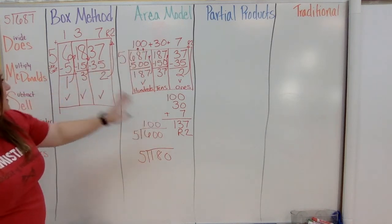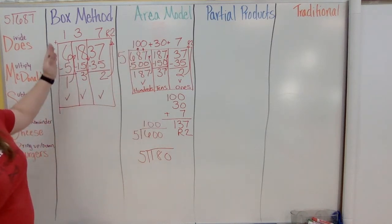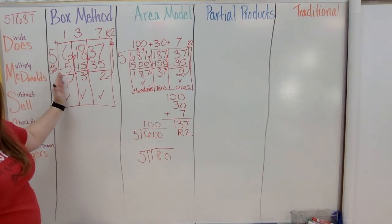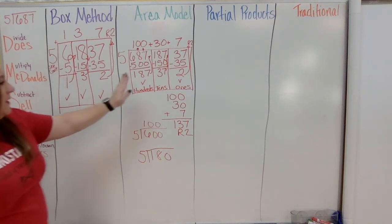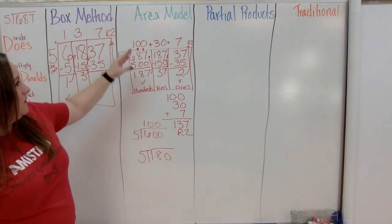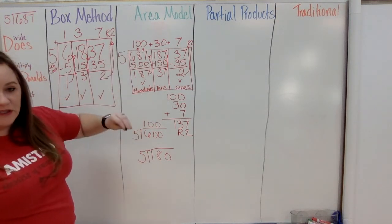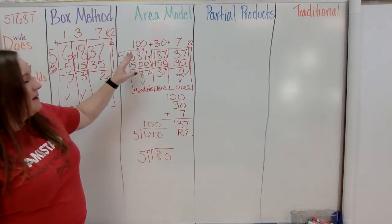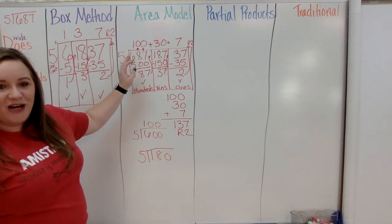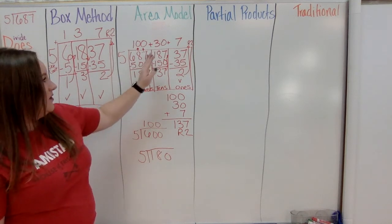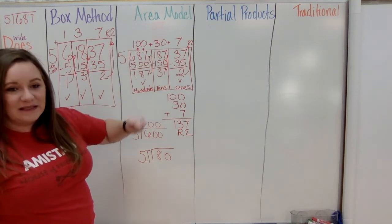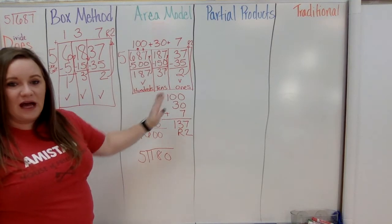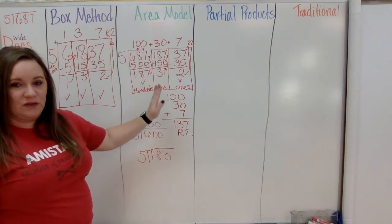The difference between box method and area model: in the box method you focus on one column at a time, while in the area model you focus on place value — taking out hundreds first, then tens, then ones. It's repeated subtraction: how many hundreds can be taken out, how many tens, how many ones.